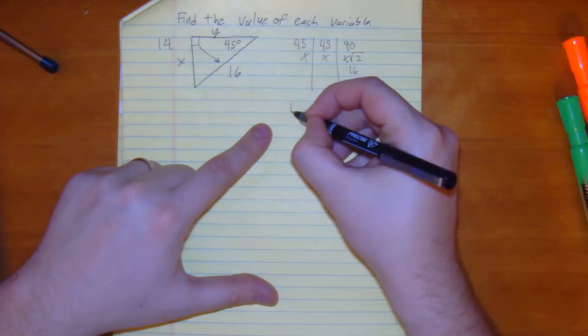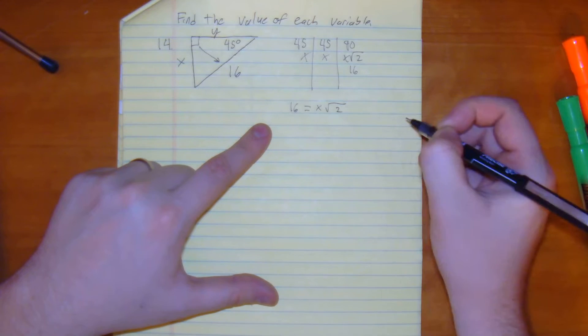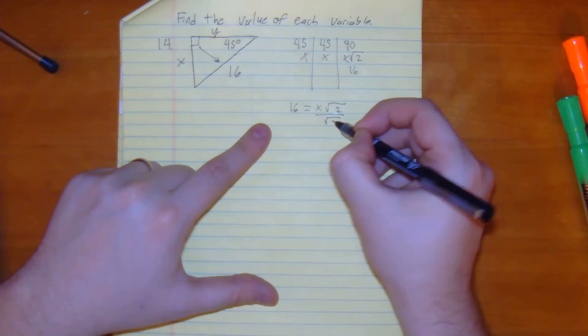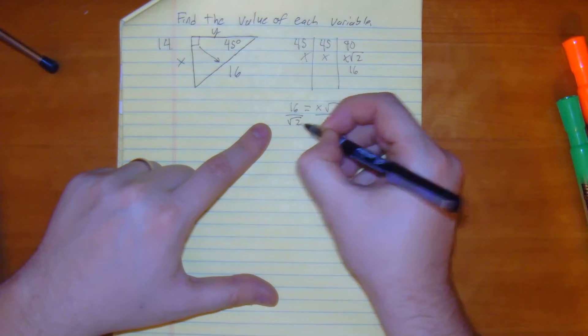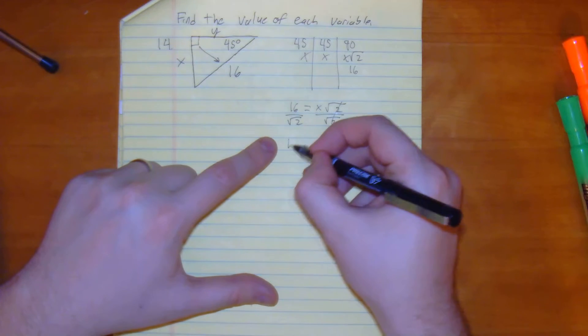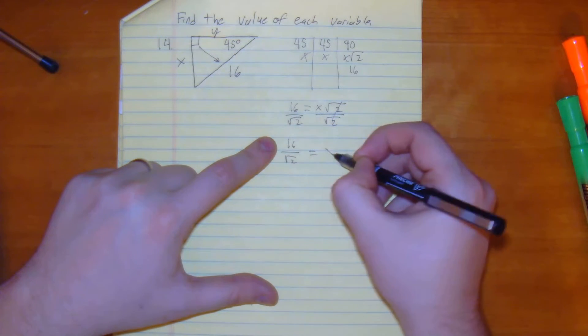So the way we're going to solve this is 16 equals x square root 2. From here, you divide both sides by square root 2. You get 16 divided by square root 2 equals x.